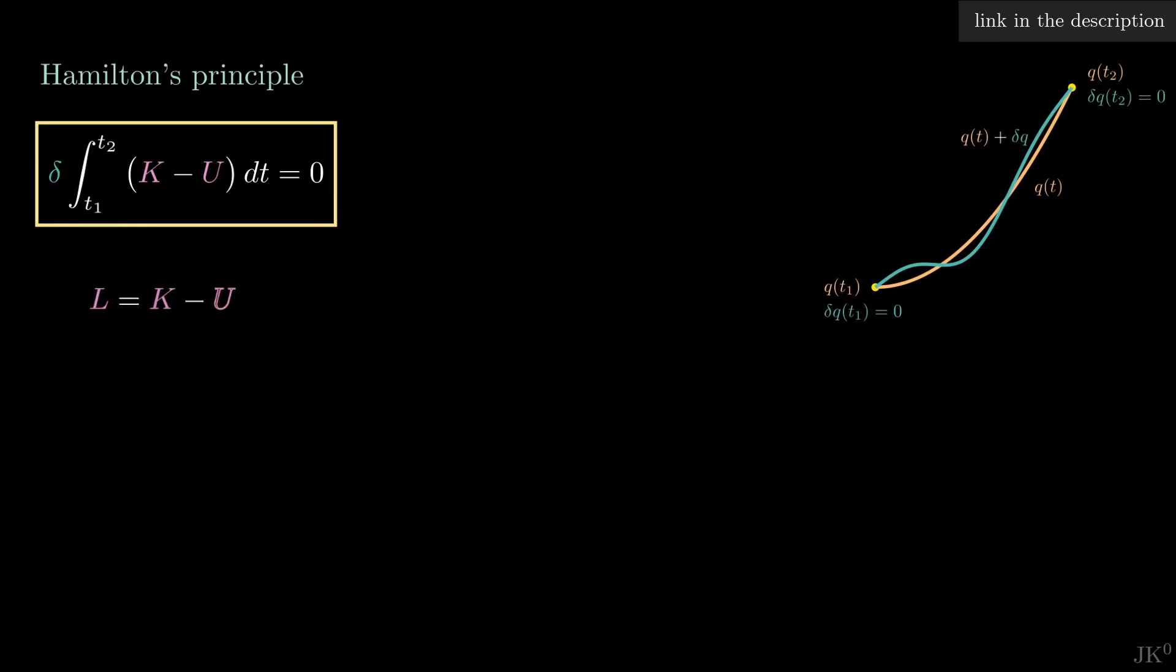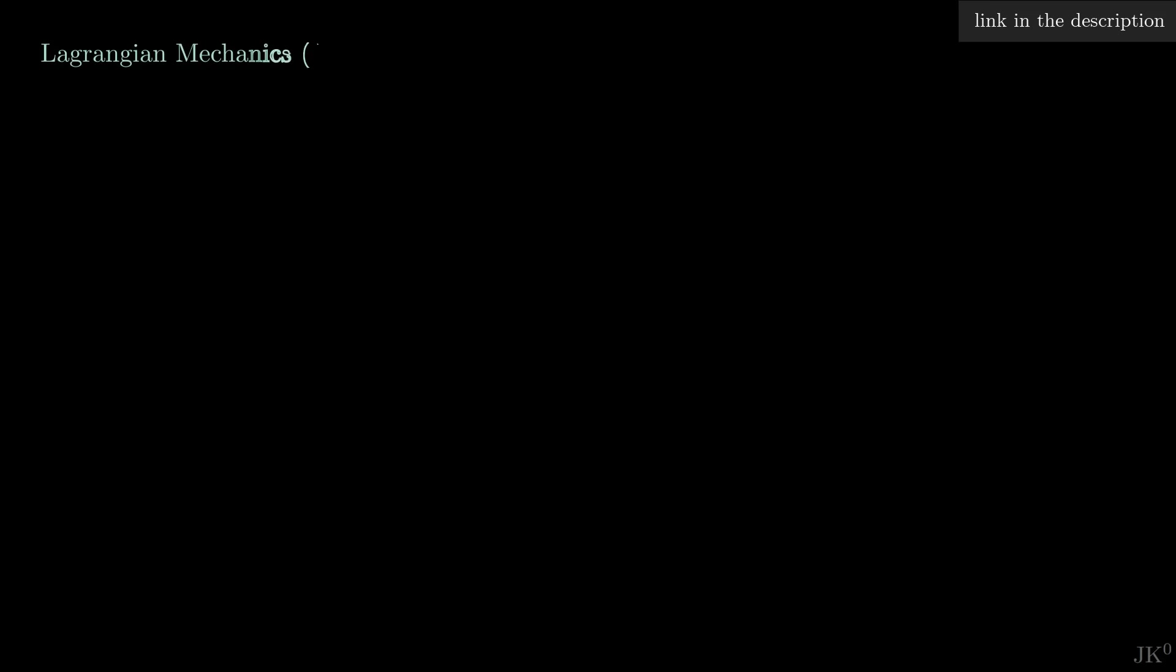In a previous video, I presented the Lagrangian formulation of classical mechanics with its action principle and corresponding equation of motion. In summary, the main object, called the Lagrangian, is defined as the difference between kinetic and potential energy of the system. The time integral of this object represents the action, which is stationary when the equation of motion, called the Euler-Lagrange equation, is satisfied.